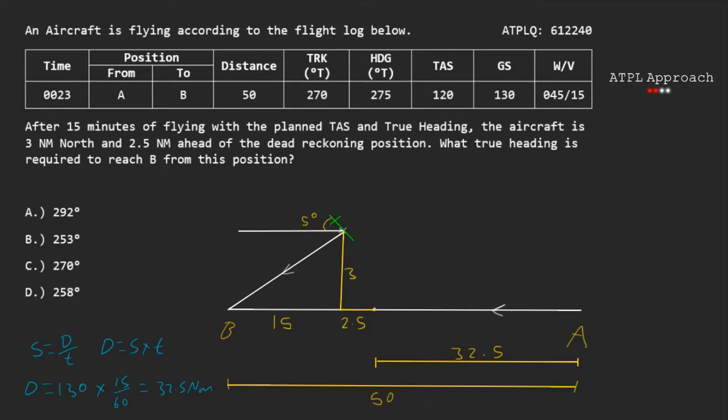The second one we can work out by using the alternate angle theorem, also known as z angles. We use that to work out that this angle and this one will be both equal. You can see the z there. To work out what this angle is, we use the 1 in 60 rule here, where we divide the off track distance by the larger distance and then multiply the fraction by 60 to give us an angle of 12 degrees.